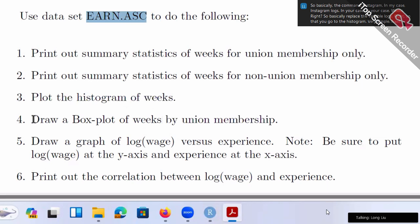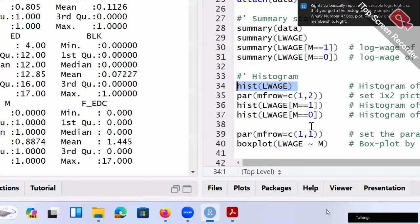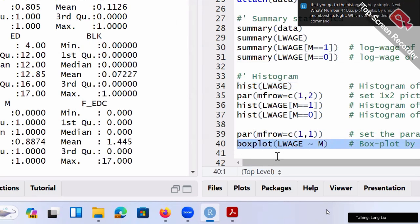Next one, number four. Box plot weeks by union membership, which corresponded to my command right here. In my example, box plot log wage squiggle M, log wage by male, female. In your case, WKS, working weeks by union. So basically your command will be box plot WKS squiggle UNION. That's the corresponding command.